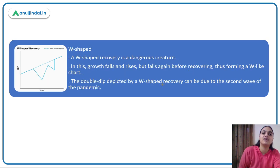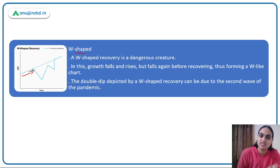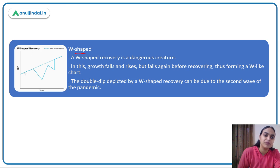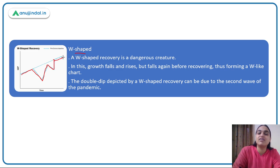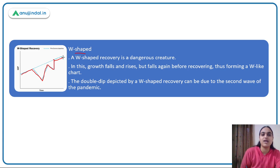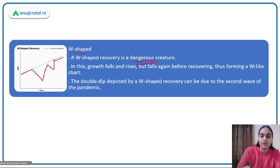Moving on to the W-shaped recovery. Here you see a graph like the letter W. The economy is going through a normal growth trend, then some disruption causes a major downfall, the situation starts improving, but then something again happens and we see a major drop before coming back to the normal trend. For example, during the pandemic: the first wave caused a major disruption, the economy started improving, then the second wave caused another major drop, and we started improving again. W-shaped recovery is a dangerous pattern — we improve, then we decline again, and then recover once more.